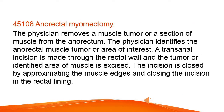Anorectal myomectomy. The physician removes a muscle tumor or a section of muscle from the anorectum. The physician identifies the anorectal muscle tumor or area of interest. A transanal incision is made through the rectal wall and the tumor or identified area of muscle is excised. The incision is closed by approximating the muscle edges and closing the incision in the rectal lining.